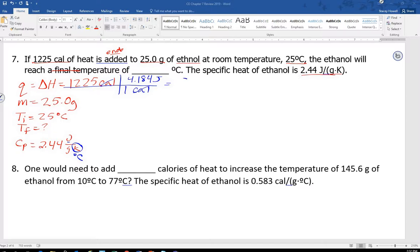So 1225 calories times 4.184 joules per calorie, calories go out. We should end up with 5000-something, I think. So if you've got both of them, save it and you're good to go. 5125.4 joules.